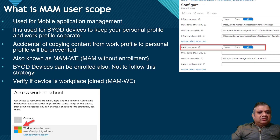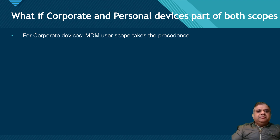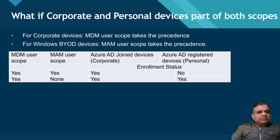Now let me clarify what happens when both MDM user scope and MAM user scope are enabled. For corporate devices, MDM user scope always takes precedence, and for Windows BYOD devices, MAM user scope takes precedence. Looking at the first option — when both MDM and MAM user scopes are enabled — for a corporate device that is Azure AD joined, it will be treated as corporate owned, so MDM user scope takes precedence, meaning the device will be enrolled.